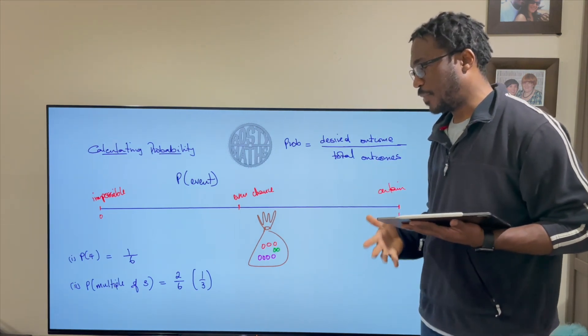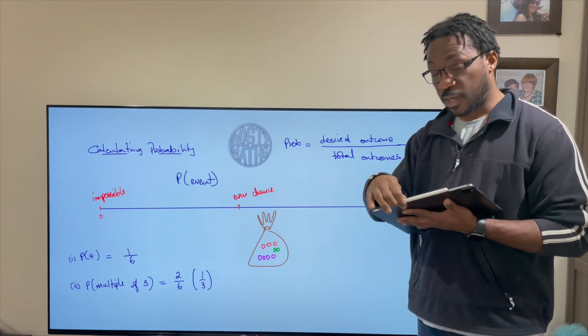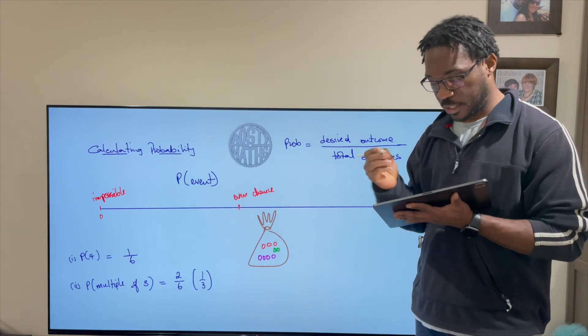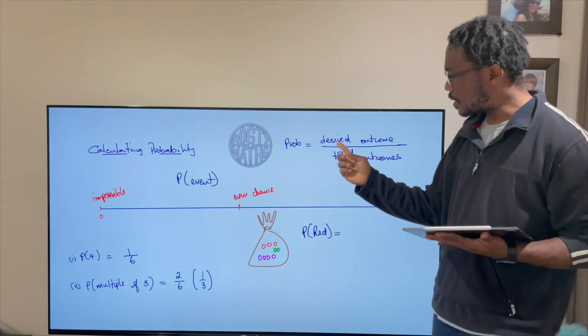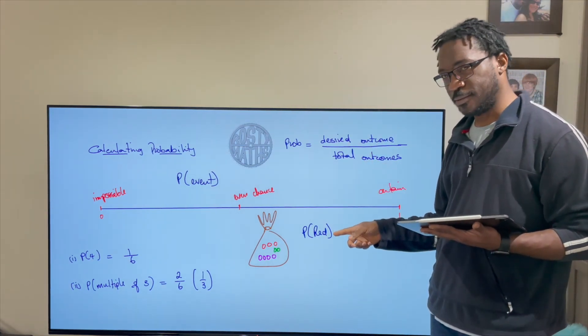What's the probability that it is red? So I will write it like this so you get used to seeing it: probability of a red counter. Well the desired outcome is red. That's what I want.